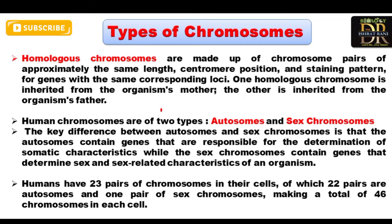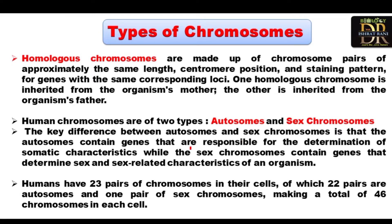In human beings we have two types of chromosomes: autosomes and sex chromosomes. Autosomes are responsible for somatic characteristics, while sex chromosomes contain genes responsible for determining the sex or sex-related characteristics of an organism.